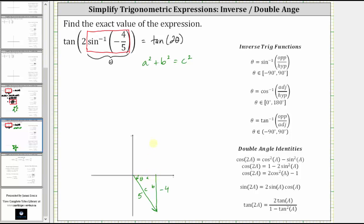Let's verify this using the Pythagorean theorem, which gives us A squared plus the square of negative four is equal to the square of five. Simplifying, we have A squared plus 16 equals 25. Subtracting 16 on both sides, 25 minus 16 is nine, giving us A squared is equal to nine. Taking the square root of both sides, the square root of nine is three, giving us A is equal to plus or minus three. But because we're in the fourth quadrant where X is positive, the adjacent leg is positive three units.